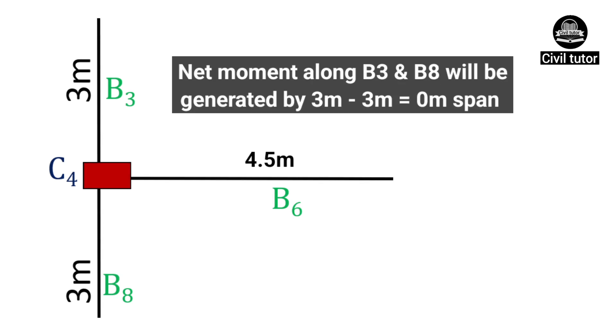For column 4, the net moment along B3 and B8 will be generated by 3m - 3m span, since both the beams lie on the same axes, but in opposite directions. Therefore, the major axes of bending will be along B6, and the depth of column 4 will be aligned perpendicular to the span of B6.